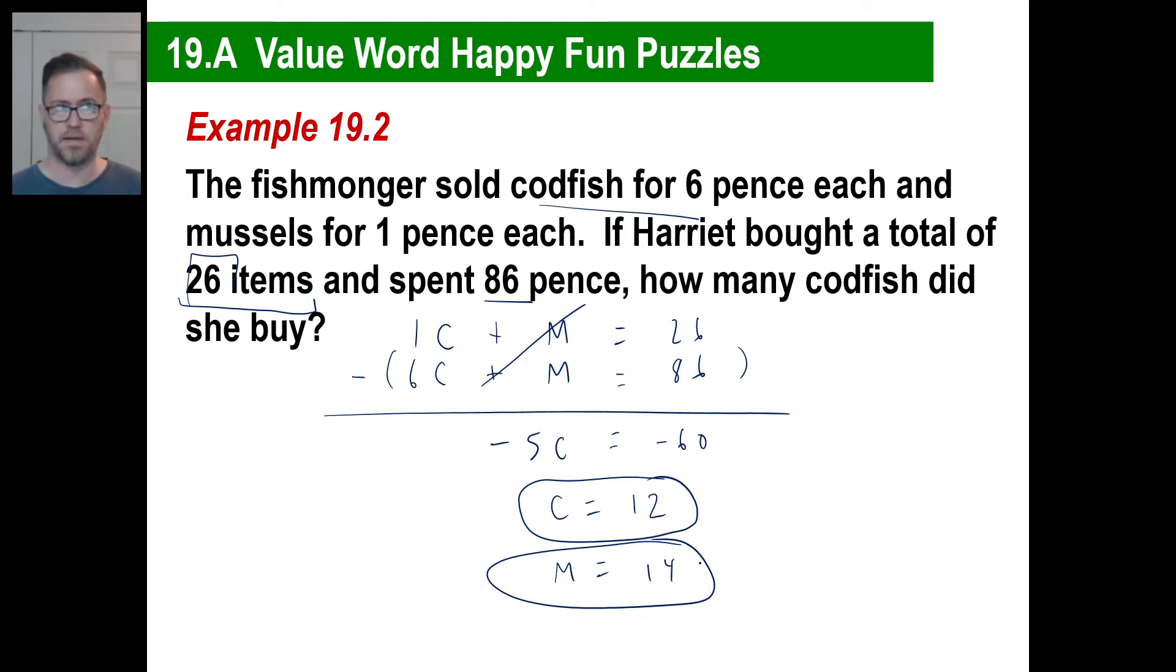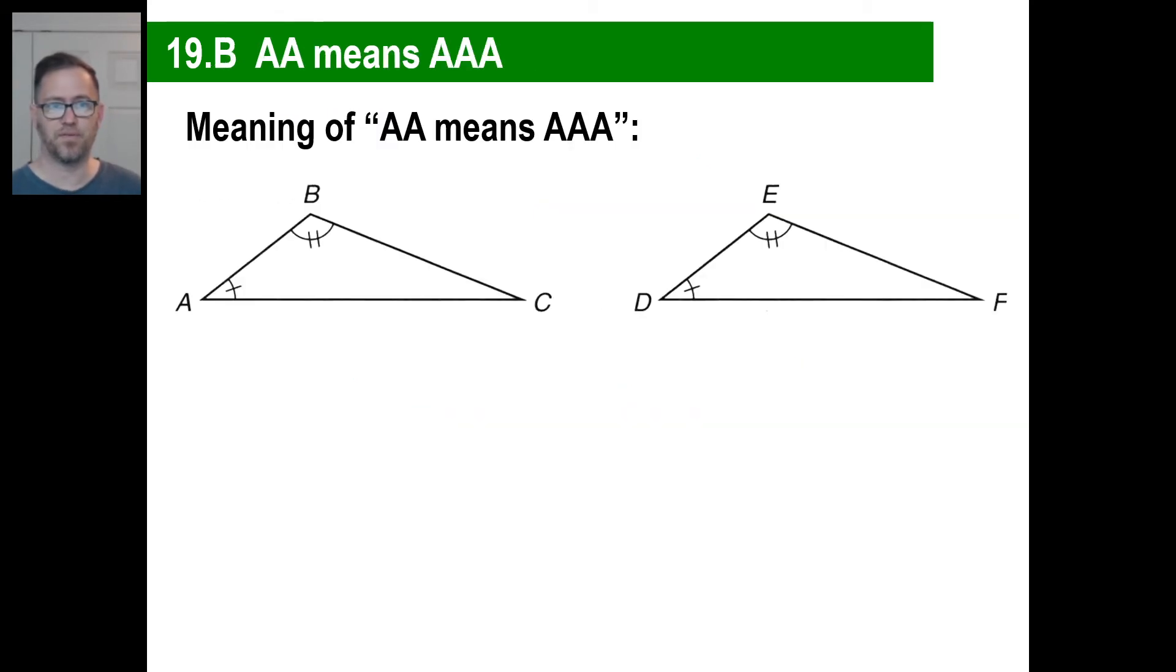If the codfish were 6 each, 12 times 6 is 72. Well, lo and behold, those added together give you 86.